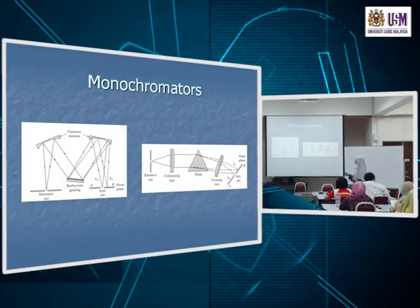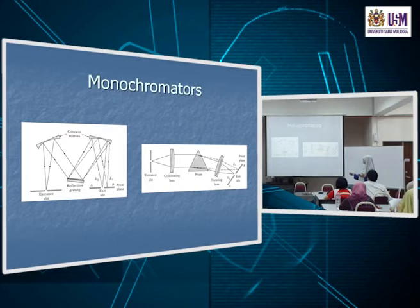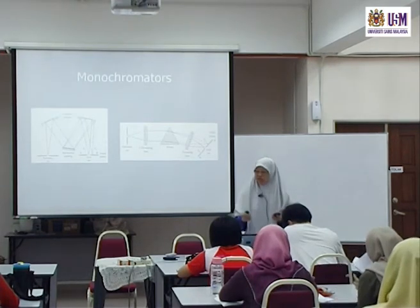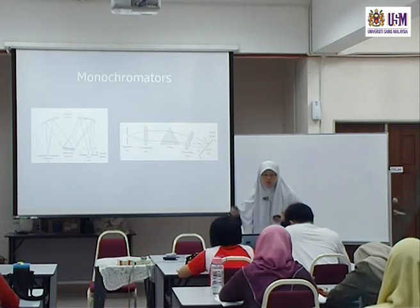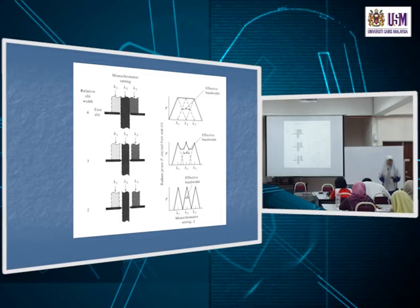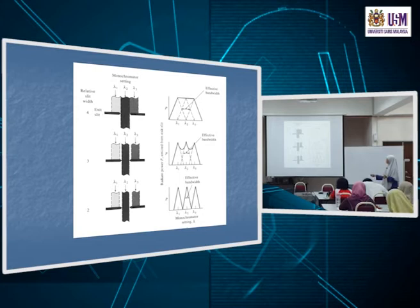With the narrowest slit width, we look at the light coming out as we continuously change the setting from λ1 to λ2 to λ3. What component do we change to decide which wavelength comes out of the exit slit? We have two kinds of monochromators — one using a prism and one using a grating. We change the position of the grating or prism to select λ1, λ2, or λ3.